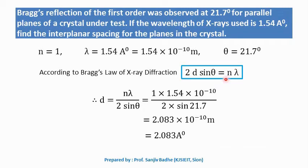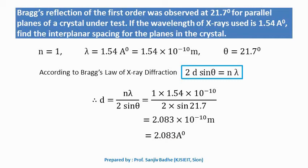Problem 1: Bragg's reflection of the first order was observed at 21.7° for parallel planes of a crystal. The wavelength of X-rays used is 1.54 angstroms. Find the interplanar spacing. Here d is asked; n = 1 (first order); λ = 1.54 × 10⁻¹⁰ m; θ = 21.7°. Using the relation d = nλ / (2 sin θ) and substituting the values, d is obtained as 2.083 angstroms.